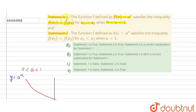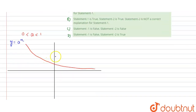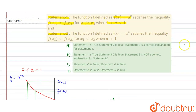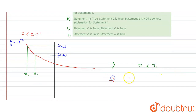The question states f(x1) is less than f(x2). Taking the corresponding values on the x-axis, we find x1 and x2. From the graph, we can see that x1 is less than x2. But Statement 1 says x1 is greater than x2 — that means Statement 1 is false.